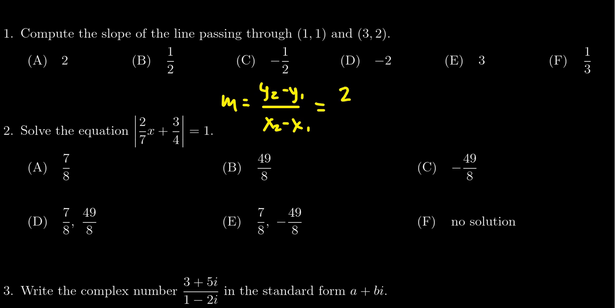Let's take 2 minus 1, the difference of the y coordinates or the rise, divided by 3 minus 1, the difference of the x coordinates or the run.